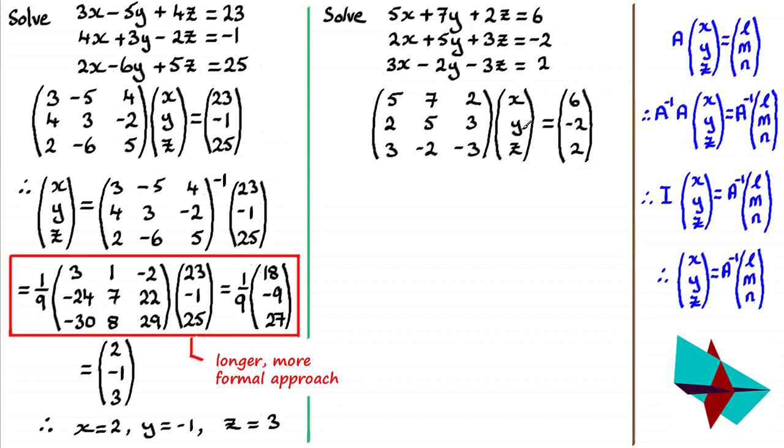So to get x, y, and z then, we need to multiply by the inverse of this matrix here, to both sides. But that's going to leave us with x, y, and z equals that inverse matrix times the column matrix 6, -2, 2.